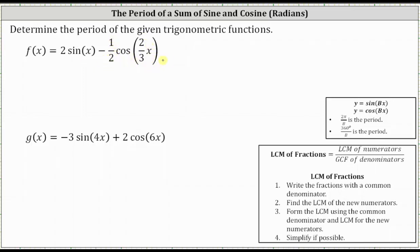Notice here we have a sum or difference of sine and cosine functions. We know when we have a single sine or cosine function, the period is equal to two pi divided by b, where b is the coefficient of x. But when we have a sum or difference involving sine and cosine functions, the period is going to equal the least common multiple of the periods of each individual trig function.